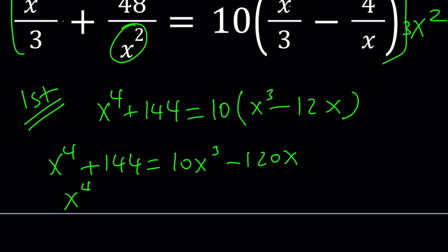Let's put everything on the same side. x to the 4th minus 10x cubed. You have to change the sign. Plus 120x plus 144 equals 0.